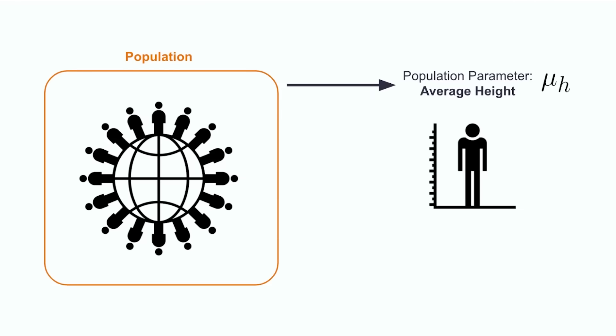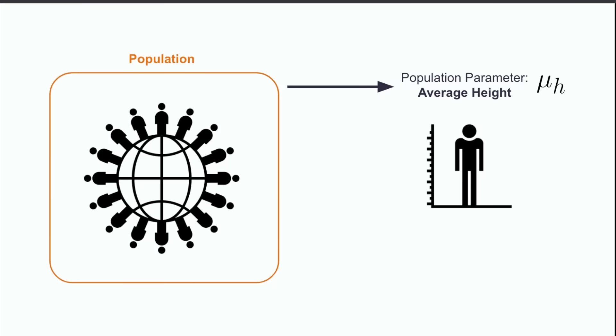Welcome back from that pause. Hopefully you've come to the conclusion that, if you cannot determine the population mean by studying the entire population, you can try to estimate this by taking a manageable representative sample population and calculating an average height for them. This average height, taken from a smaller sample of the population, is referred to as a sample statistic, and for average height, we would write this as x bar h.